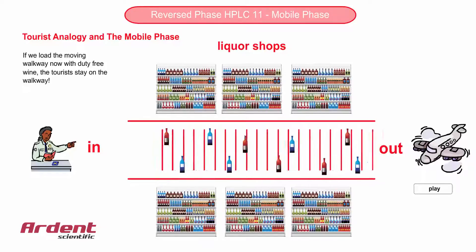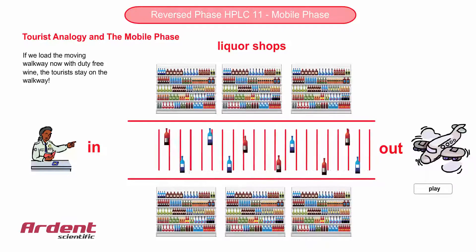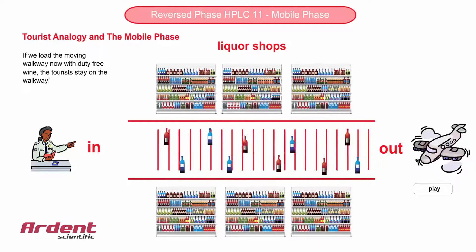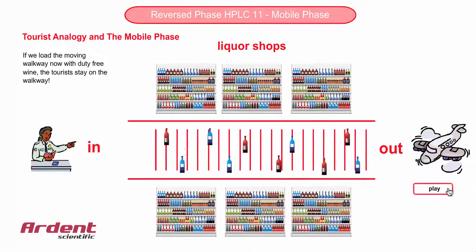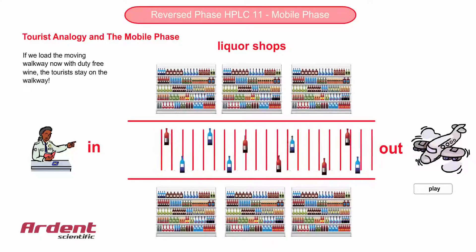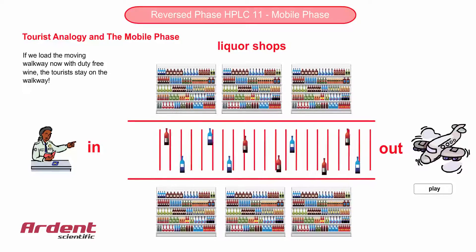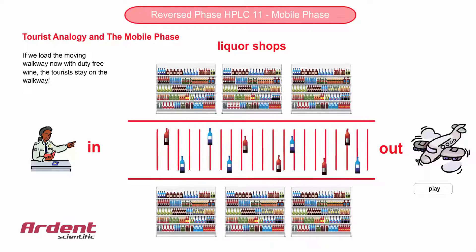In chromatography terms, the tourists all exit at the unretained time — that is T0 — the time discussed in the first e-learning module titled Fundamentals of HPLC. So from here, if we want to entice the tourists to spend some time in the shops, we need to decrease the amount of wine on the moving walkway.